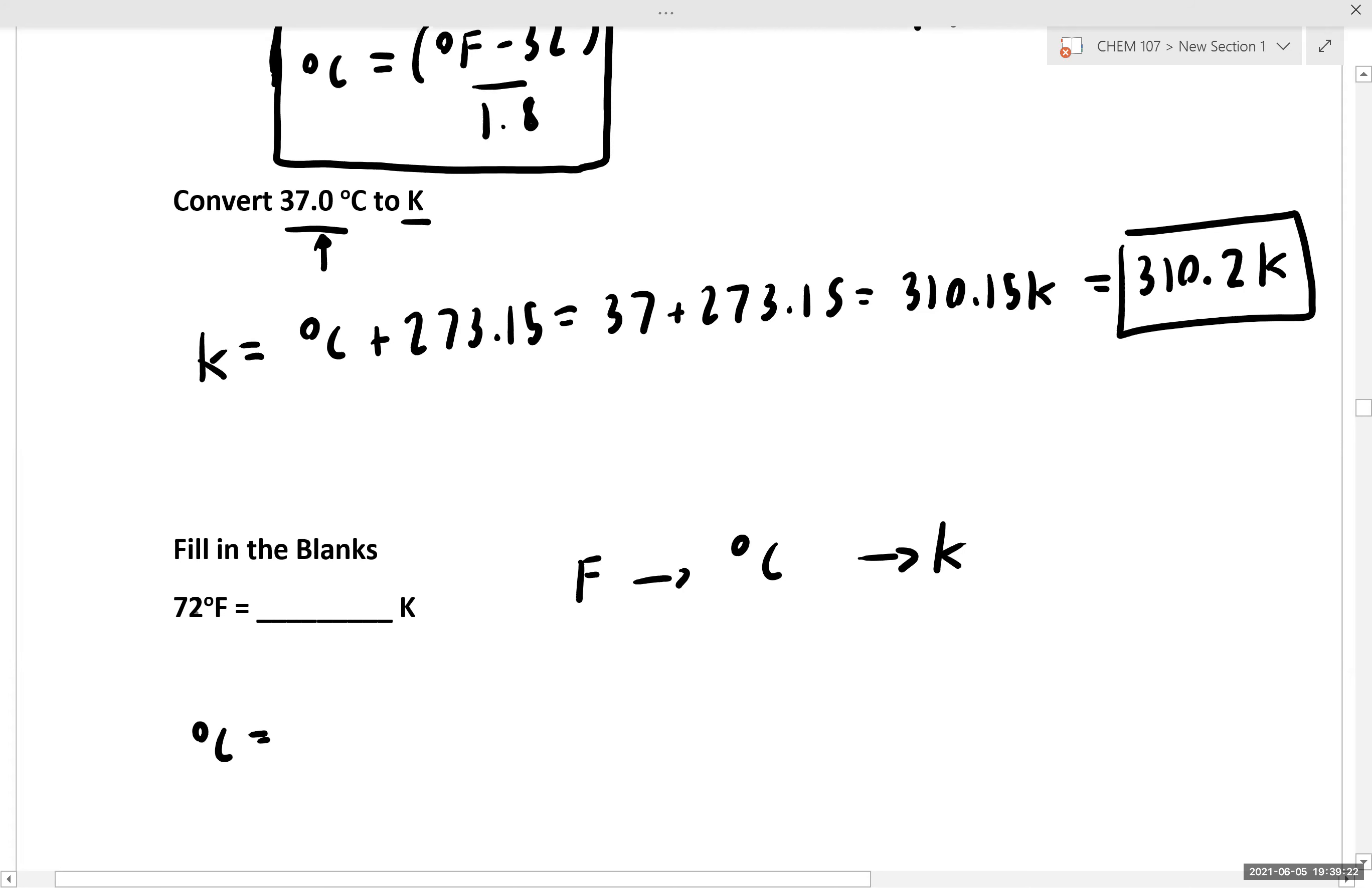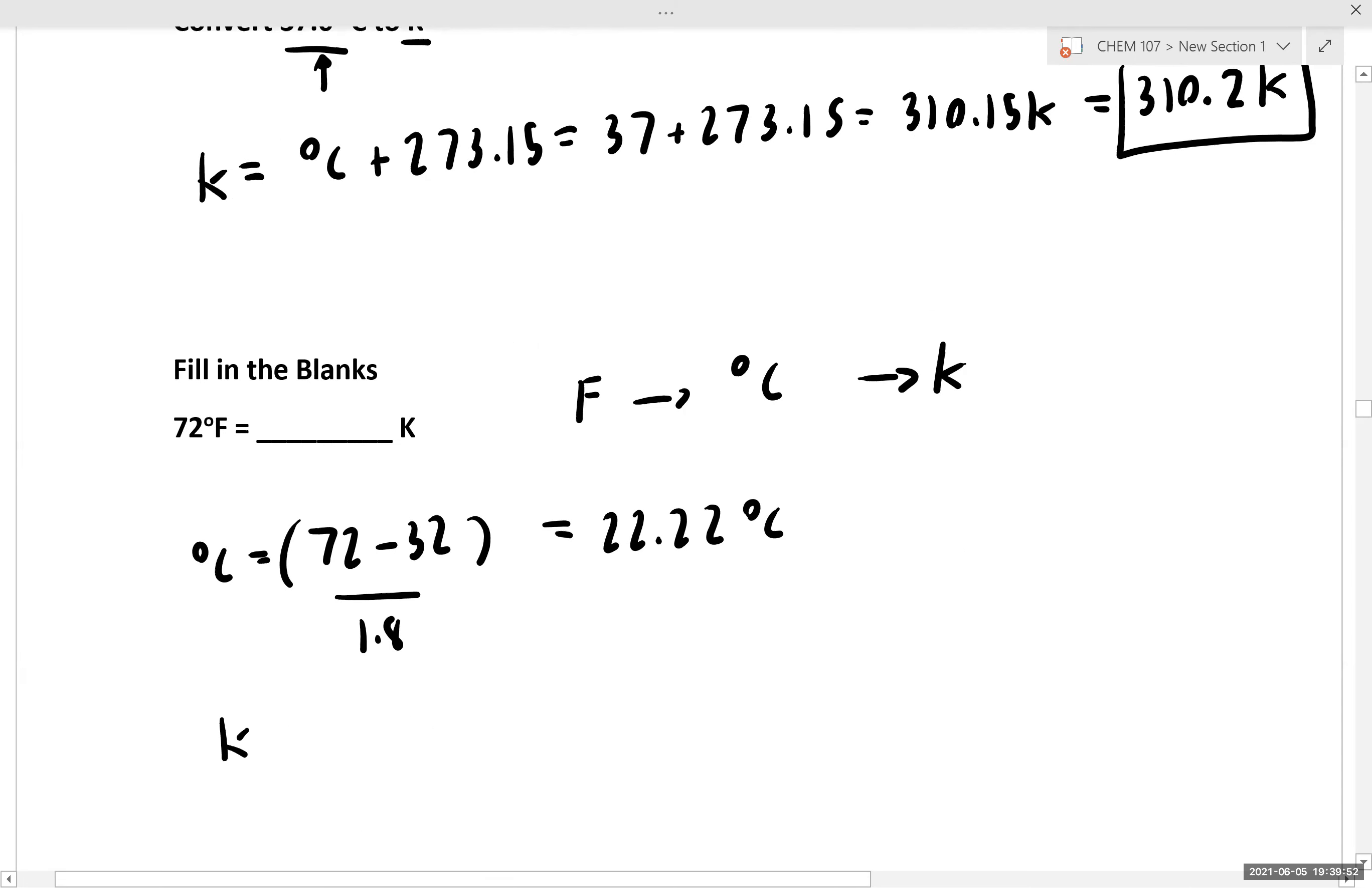So first, let's convert this 72 degrees Fahrenheit into Celsius. We have (72 - 32) / 1.8, and that gives us 22.22 degrees Celsius. Remember, we don't round until the end. From here, we're going to convert this temperature in Celsius into Kelvins by taking our temperature in Celsius plus 273.15.